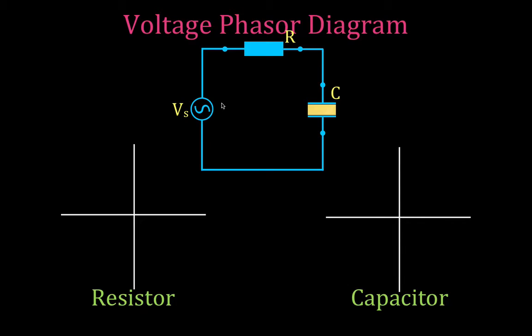In this first part of this video, I'm going to go over the phasor diagram for voltage — the voltage phasor diagram — and show you how to determine the voltage of the source, and also how to determine the phase angle between the voltage and the current for RC circuits. In the following videos, I will go over some worked calculation examples.